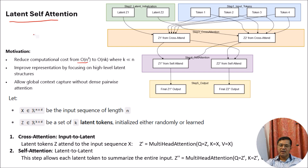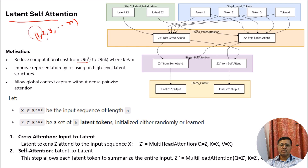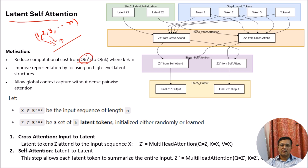To understand the main benefit of latent self-attention, we can compare it with the traditional self-attention. Suppose we are taking the traditional self-attention and we have a total of N tokens in the document. Then in the calculation process, we will calculate the attention by using every pair of tokens. In that case, the total cost of the calculation of attentions will be O(N²).